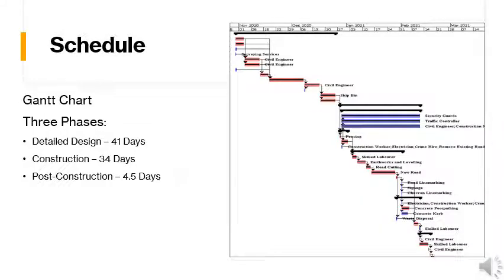Alongside the schedule is a Gantt chart. This visualises each task in terms of duration and provides a reference as to which tasks take longer, as well as showing the critical path of which the project proceeds. Furthermore, the three main phases — detailed design, construction and post-construction — can be seen on the chart from the overarching brackets above their corresponding tasks. These details are further discussed in the Construction Management Plan document.